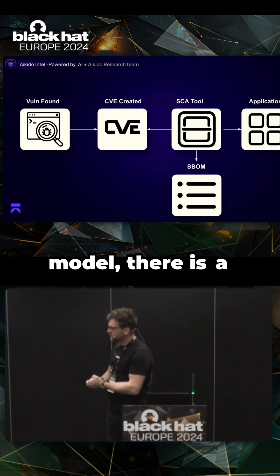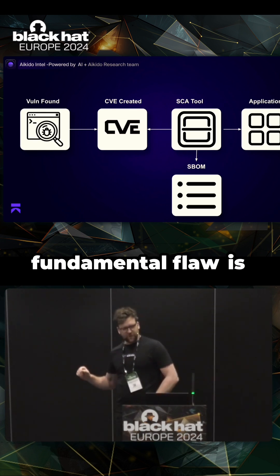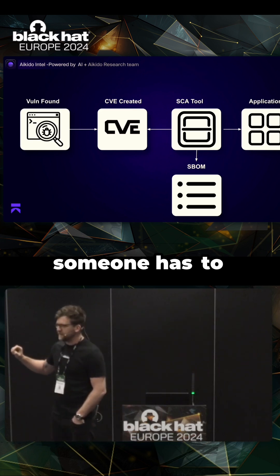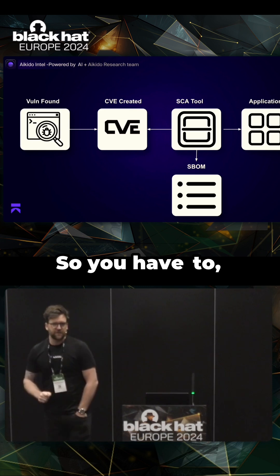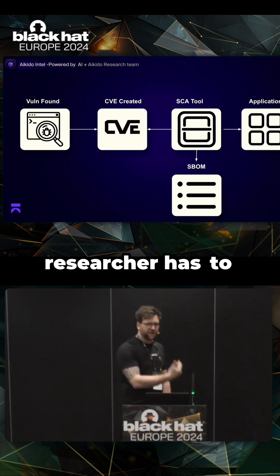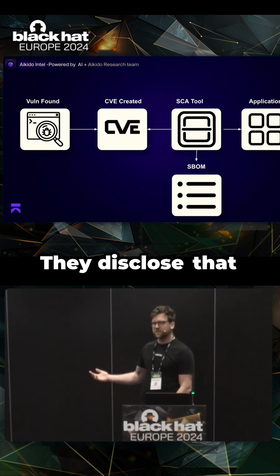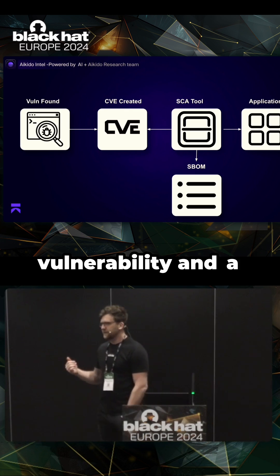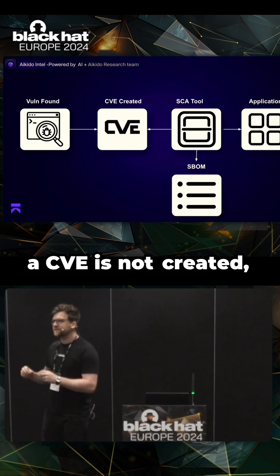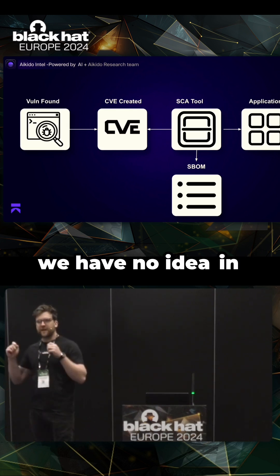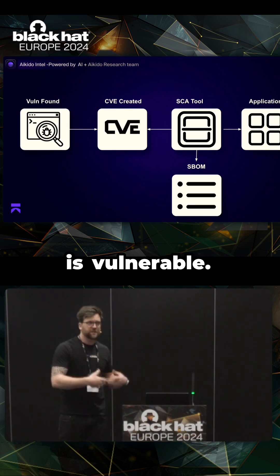But in this model, there is a fundamental flaw. That fundamental flaw is that in order for there to be a CVE, someone has to report the vulnerability — either a security researcher has to find it, or the maintainer finds it, releases an update, discloses the vulnerability, and a CVE is created. This is very important because if a CVE is not created, we have no idea in our current system that that component is vulnerable.